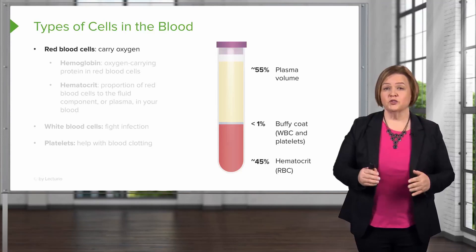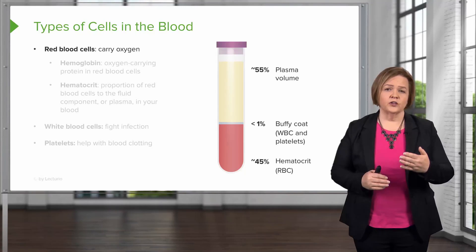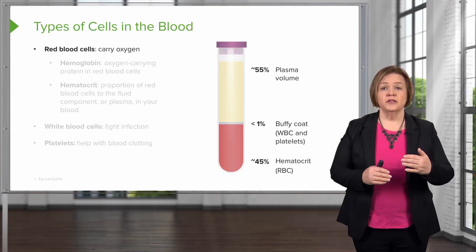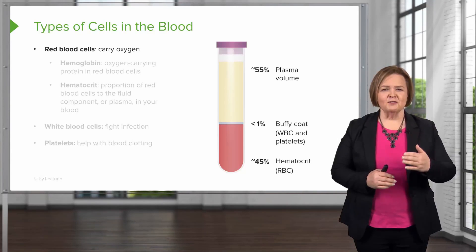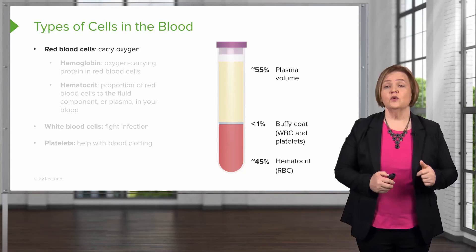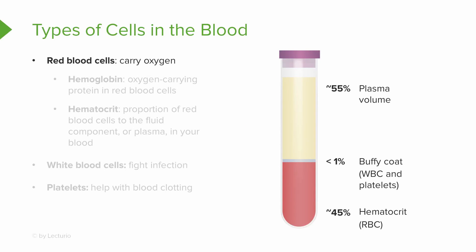We've got a great picture here that tells you the percentages of the cells. 45% is your packed red blood cells, 1% is the buffy coat — that's your white blood cells and your platelets — and 55% is plasma volume. There are three types of cells in the blood: red cells, white cells, and platelets. Take a look at that test tube and start to get set in your mind what the percentages are, because look what a tiny percentage white cells are of an average healthy blood sample.